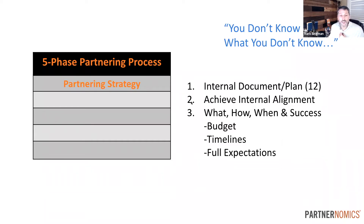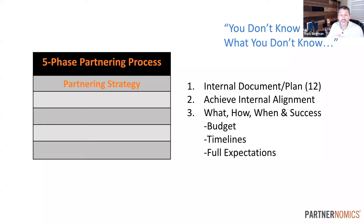That hits number two: achieve internal alignment. These very specific plans provide the what, how, when, and how we define success. We talk about budgets — a lot of times it can take more time, money, and resources to stand up or execute these partnering initiatives than we realize. Number two is timelines, critically important, since many different pieces of the business are working together as we execute a partnering initiative.